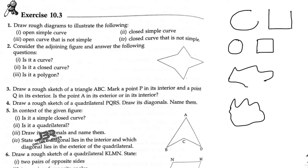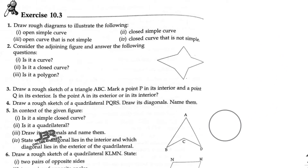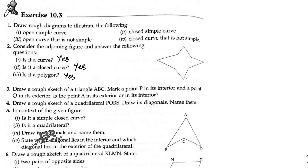Now sum number two: consider the adjoining figure and answer the following questions. Is it a curve? Yes, definitely. Is it a closed curve? Yes, obviously a closed curve. Is it a polygon? Yes, it's a polygon.